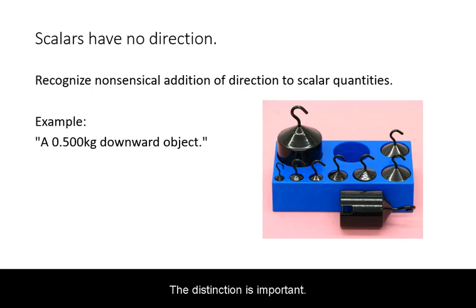The distinction is important. Mass, for example, does not have a direction, therefore describing mass as being 0.5 kg downward is nonsensical.